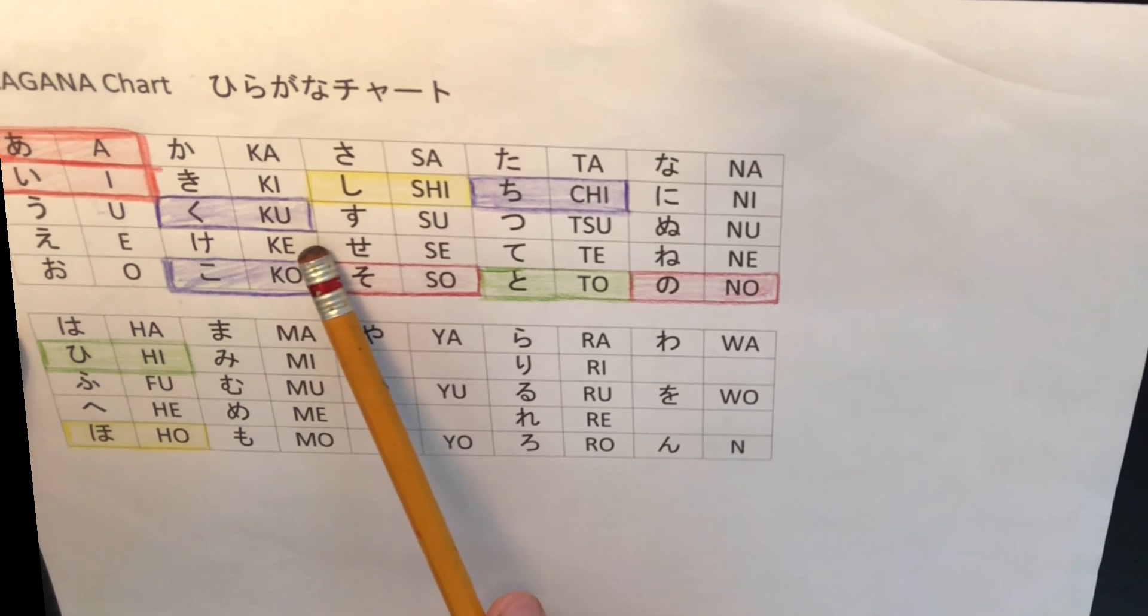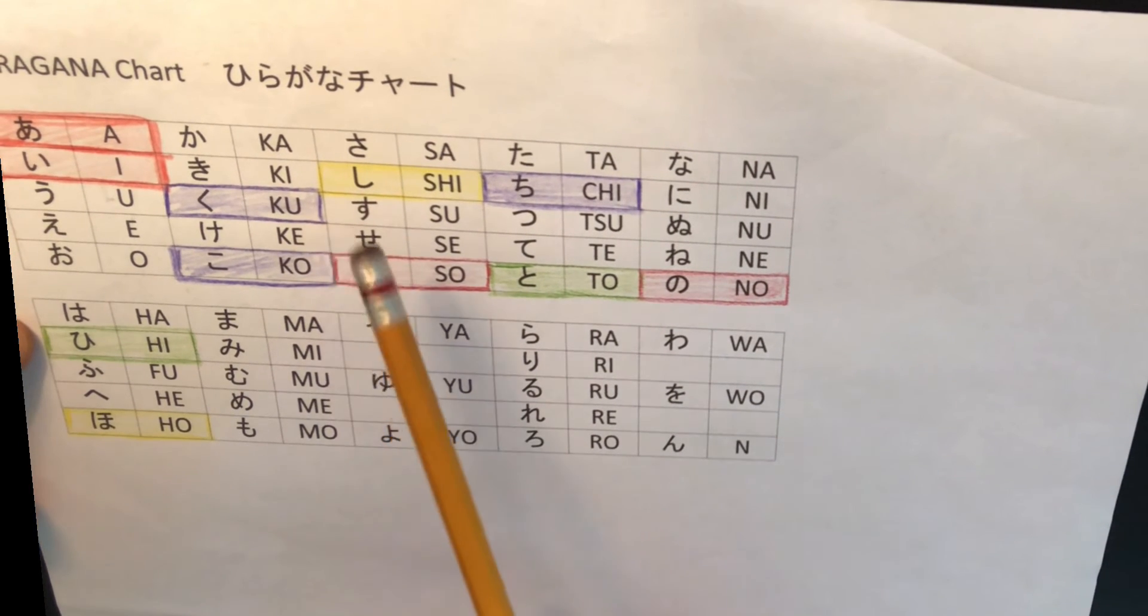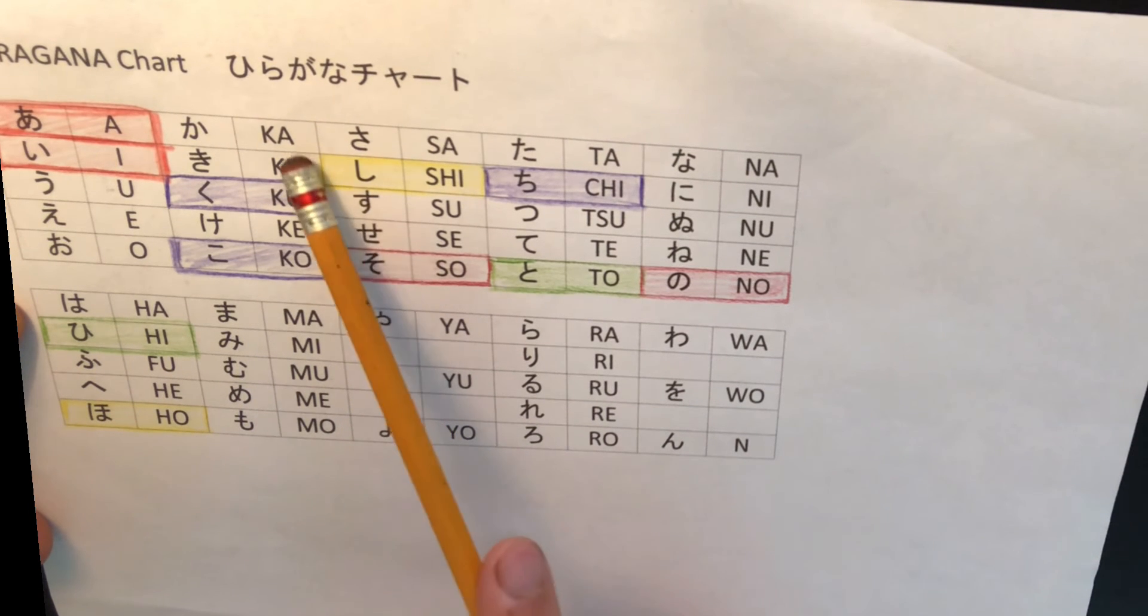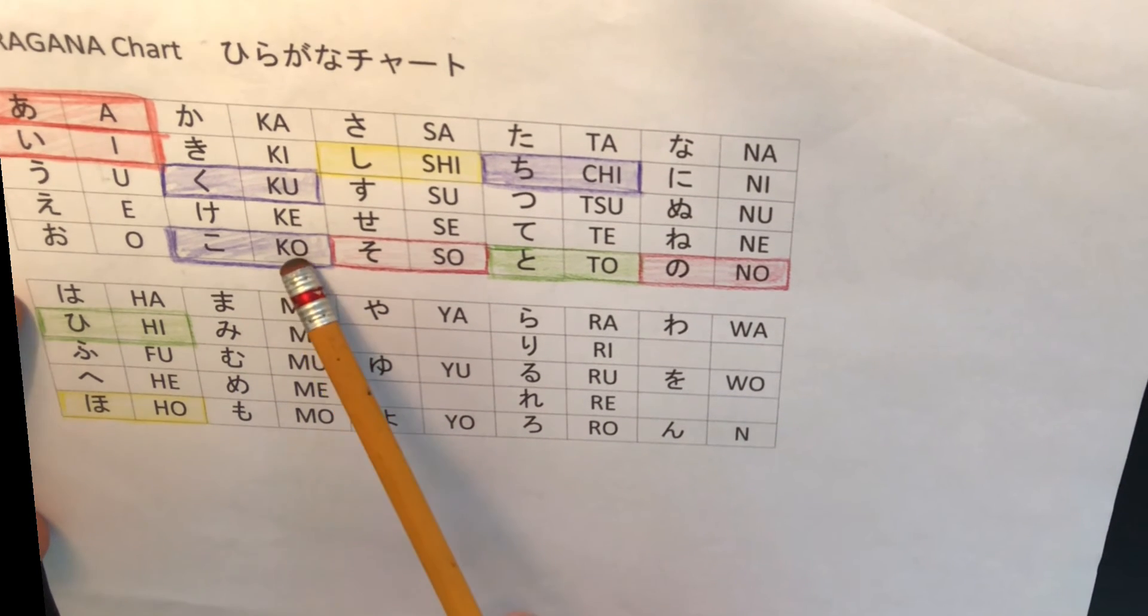The next hiragana is ku. Ku is also in the second vertical line. The third line, the third letter, ka ki ku ke ko. So, ko and ku. The first letter is k.